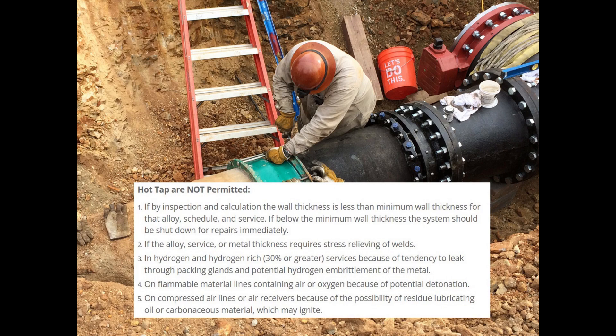Hot taps are not permitted if, by inspection and calculation, the wall thickness is less than the minimum wall thickness for that alloy, schedule, and service — if below the minimum wall, the system should be shut down for repairs immediately. Hot taps are also not permitted if the alloy, service, or metal thickness requires stress relieving of welds, or in hydrogen and hydrogen-rich (30% or greater) services, because of the tendency to leak through packing glands and potential hydrogen embrittlement of the metal.